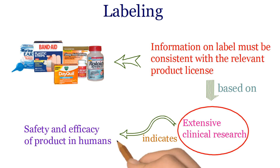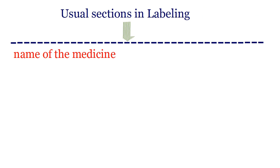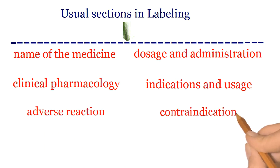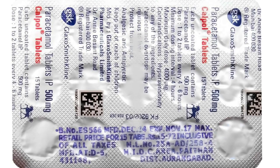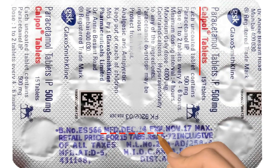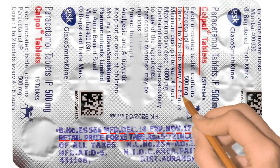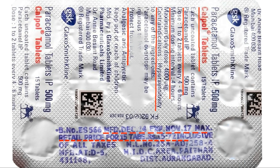Labels on any medicine include the name of the medicine, doses and administration, clinical pharmacology, indications and usage, details of any adverse reactions, contraindications, warnings, precautions, and so on. For example, a good label includes the name of the medicine, manufacture date, expiry date, MRP, chemical constitution, dose of medicine, minimum dosing intervals, contraindications, and storage instructions.